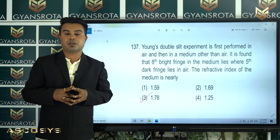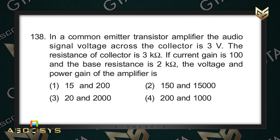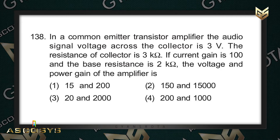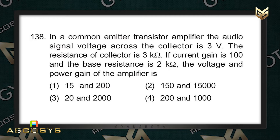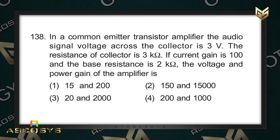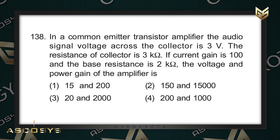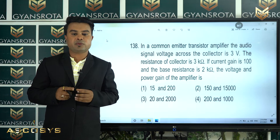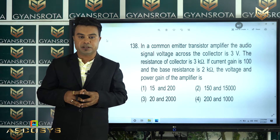Question number 138: In a common emitter transistor amplifier, the audio signal voltage across the collector is 3 volts. The resistance of the collector is 3 kilohms. If the current gain is 100 and the base resistance is 2 kilohms, find the voltage gain A_V and power gain P_V of the amplifier.